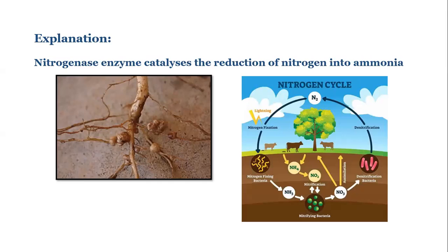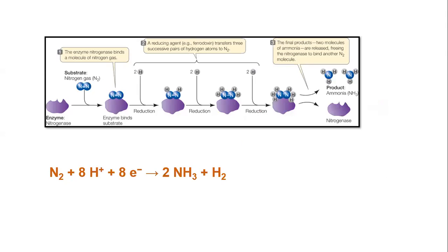Nitrogen fixation takes place in a stepwise manner. As you can see in the graphic, the enzyme nitrogenase — which is a bacterial enzyme — converts nitrogen into ammonia. In this process, which is dependent on ATP, a hydrogen molecule is released along with ammonia. So here, reduction of nitrogen takes place.